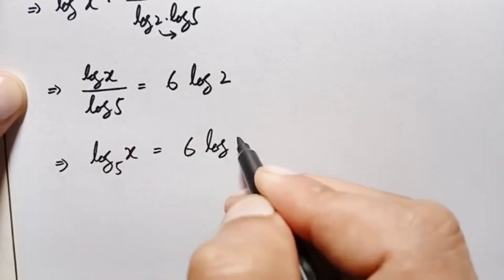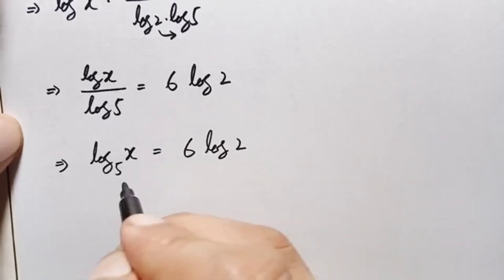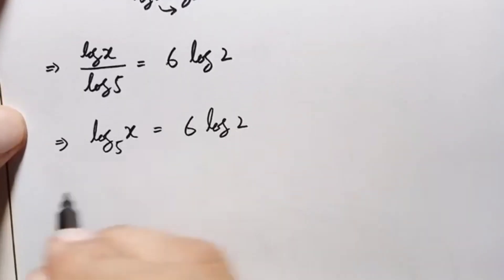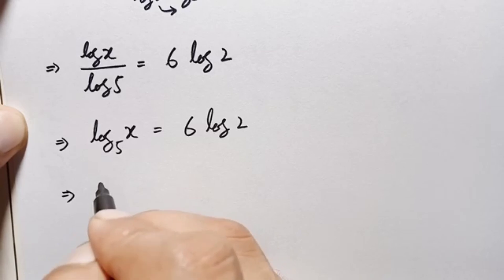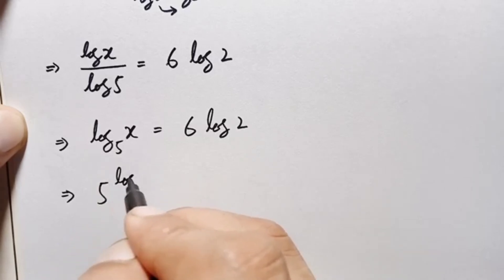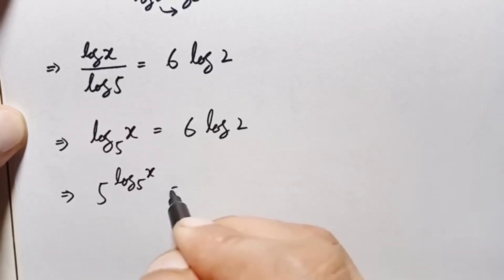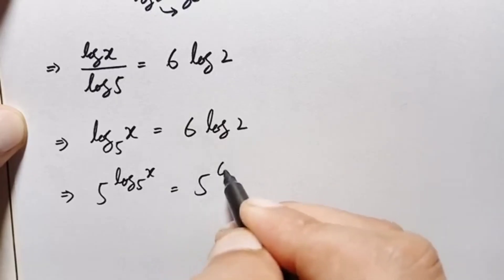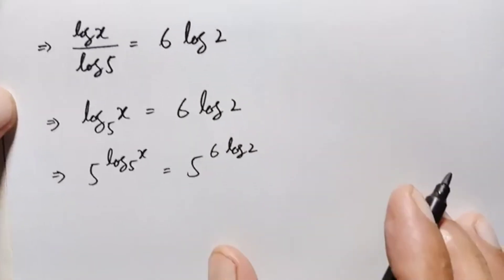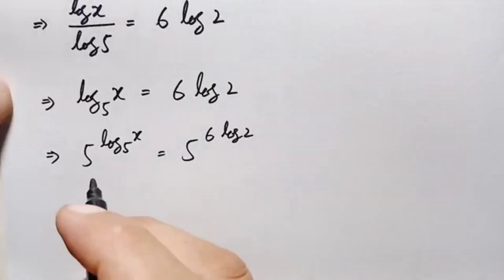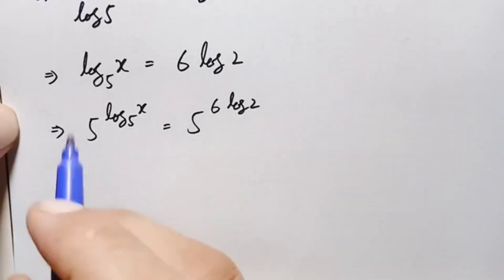We raise 5 to the power of both sides. This gives 5 raised to the power of log of x with base 5 equals 5 raised to the power of 6 times log of 2. On the left hand side we use the identity: a raised to the power of log base a of b equals b.